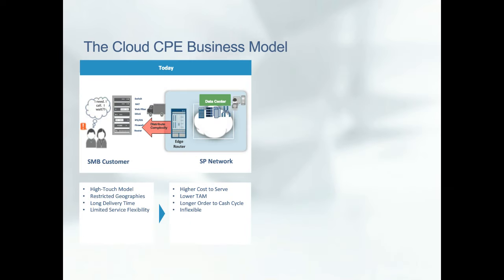We will look at the Cloud CPE business model overview. If we look at the traditional hardware-based appliance, the process involved is a very high-touch model. It includes manual ordering, inventorying, activation, billing, and setup — all manual processes, which implies a high cost-to-serve model. The geography is also very restricted because of managed WAN facilities, and truck rolls must be sent to provision and troubleshoot, which reduces our total addressable market. Service flexibility is also rigid because you need a hardware black box per functionality.